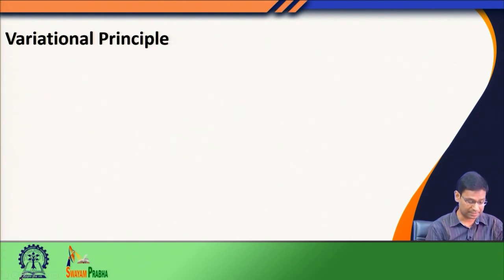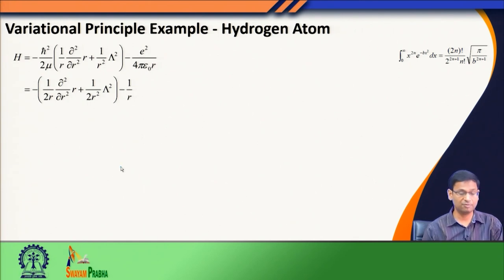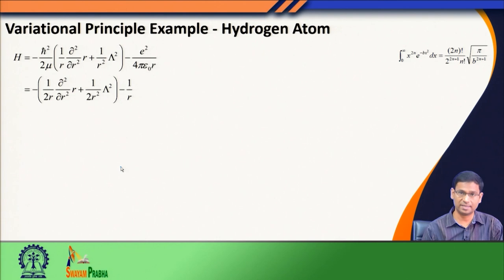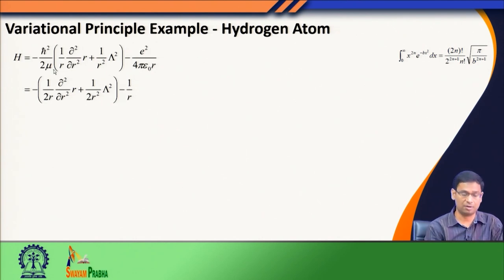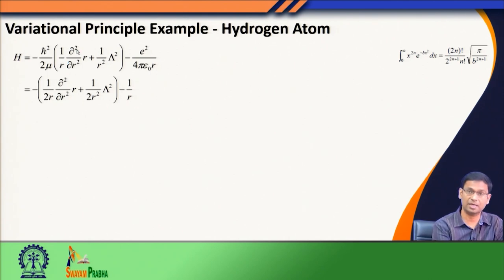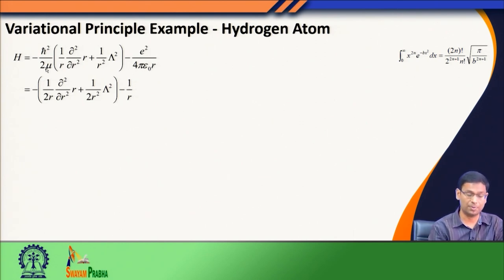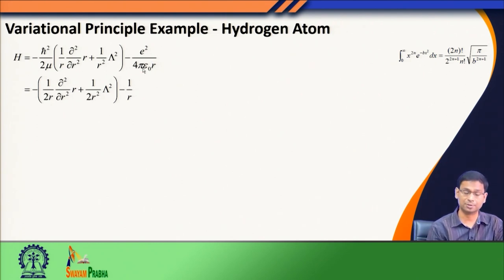We will now look at one example: using variational principle to solve the hydrogen atom. You might say we have already solved hydrogen atom exactly — and that is precisely the point. We will consider an example where we know the exact solution, pretend we do not, start with a different trial function, and see what we get. This is the Hamiltonian of the hydrogen atom: the first term is the kinetic energy, minus h-bar squared over 2 mu times the Laplacian, which has a radial part and a Legendrian term. Writing this Hamiltonian in atomic units, h-bar and the electron mass mu are gone, and the potential energy between the electron and nucleus becomes simply minus 1 over R.